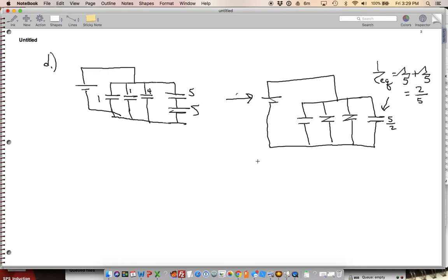So to find that equivalent, all of these together, I just add them together. We've got 1, 1, 4, and 5 over 2. So CEQ for all of them together is going to be, this is equal to 2 and a half. So 6 plus 2 and a half is 8.5, and that's microfarads. So that gives us D.